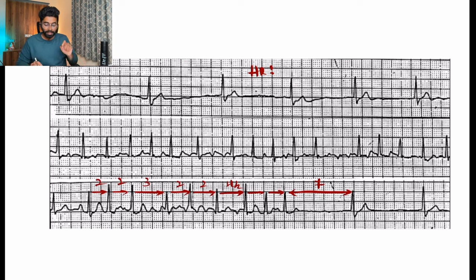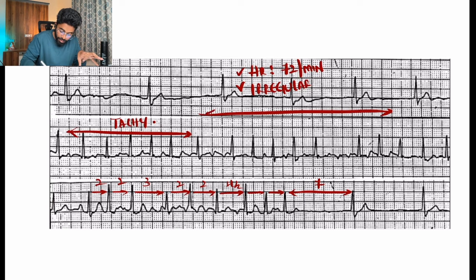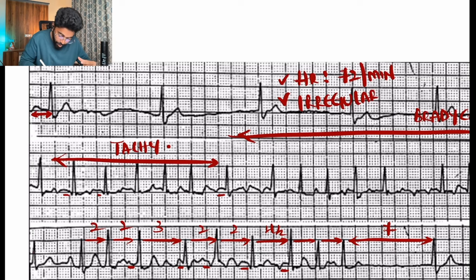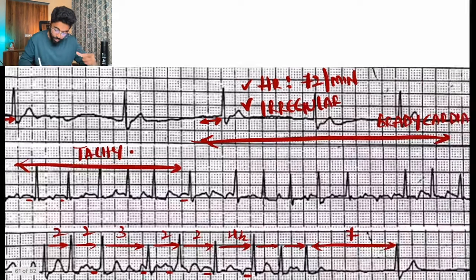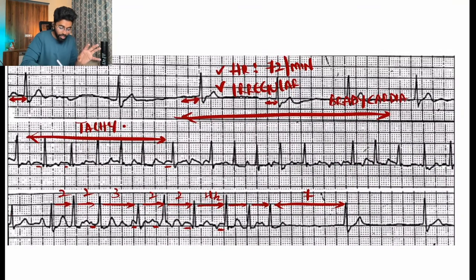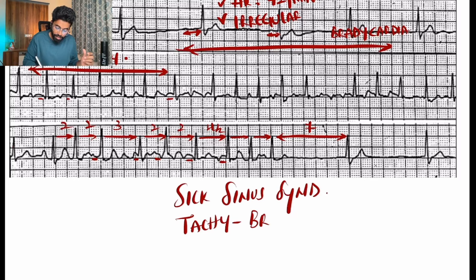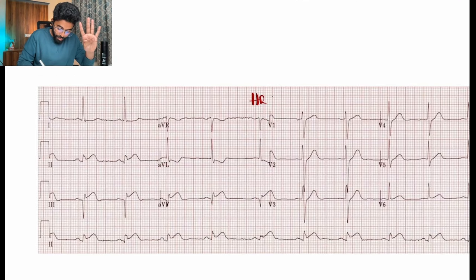This ECG clearly shows an irregular rhythm. We can see that in some leads there is tachycardia and in some leads there is bradycardia. There is no PR interval in some areas, and in others the PR interval is broader and prolonged, which clearly shows dysfunction of the SA node — this is sick sinus syndrome, also known as tachycardia-bradycardia syndrome.